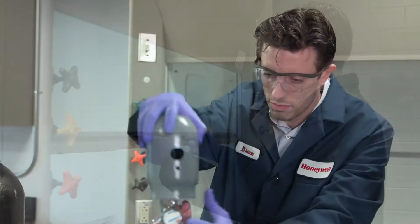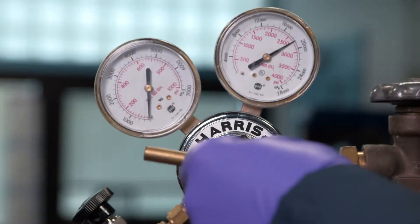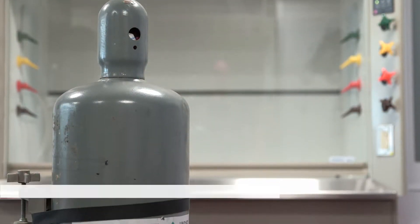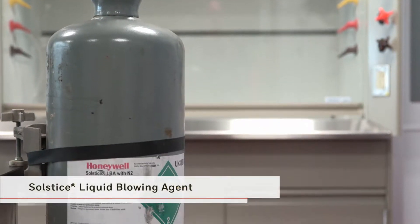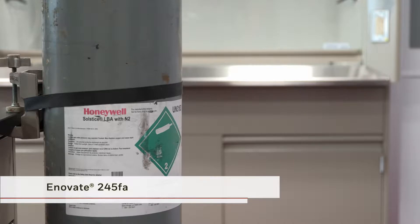Today we're going to offer guidance on how to pressurize a 100-pound or 45.4-kilogram cylinder. This cylinder is among the packages widely used for Honeywell Solstice LBA, Solstice GBA, and Ennovate 245FA.